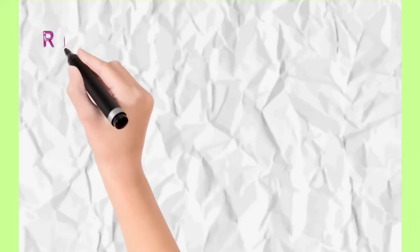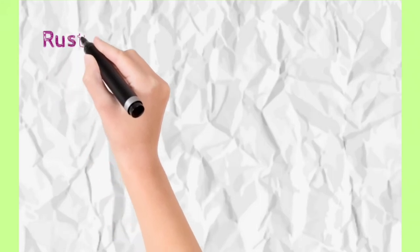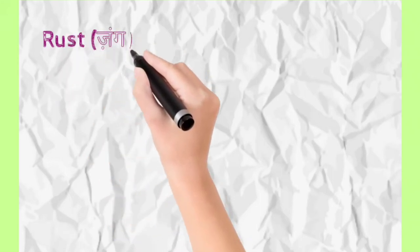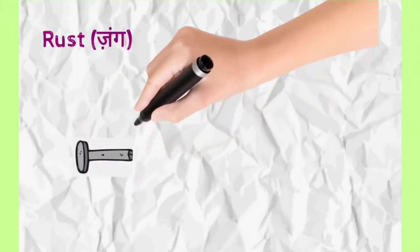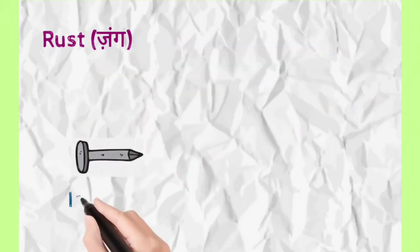Let us firstly know what is rust. In Hindi we call it जंग. You will see that in any iron object, when water is used for a long time, rust forms.